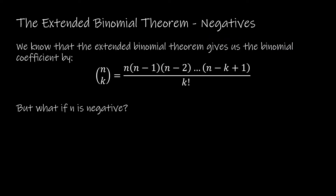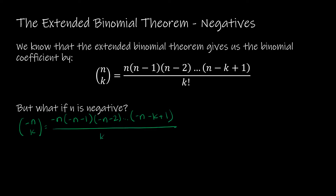Now let's look at what happens when n is negative. We replace n with −n, which gives us the numerator: (−n) · (−n−1) · (−n−2) · … · (−n−k+1) divided by k!. I want to factor a negative 1 out of everything in the numerator, taking it out k times. That turns −n into +n, −n−1 into n+1, −n−2 into n+2, and so on, all the way to n+k−1.